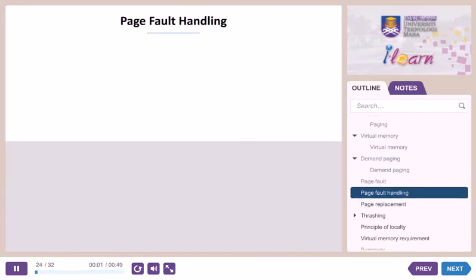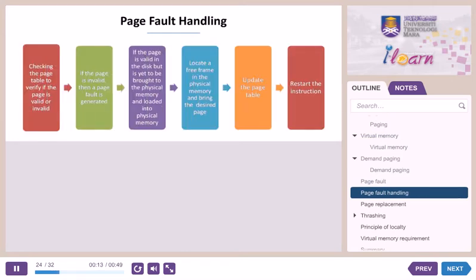Page fault handling. If a page fault occurs, it is handled through several steps: check the page table for the process — if invalid, terminate the process; if valid, page in. Find a free frame. Schedule a disk operation to read the desired page into the newly allocated frame. Once the disk read is complete, the OS modifies the page table to indicate the page is now in memory, then restarts the instruction. Page fault occurs initially when starting a program, sometimes called pure demand paging — no page is in memory and pages are never brought in until required.